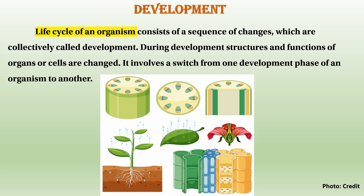The life cycle of an organism consists of a sequence of changes. These changes are collectively called development. The development of an organism consists of a sequence of changes during which structures and function of organs or cells are changed.